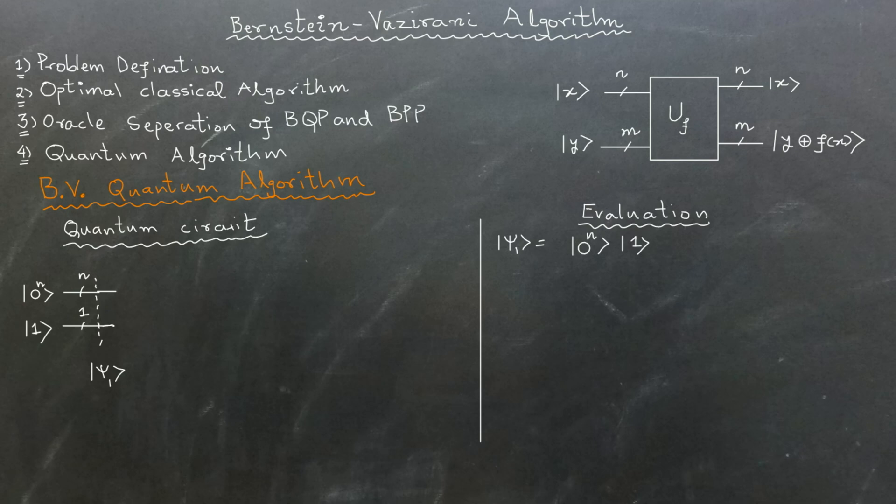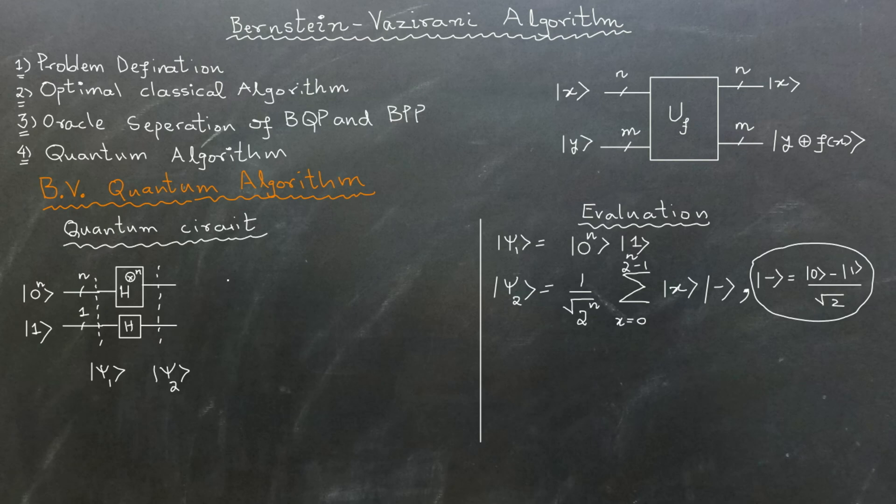Next, we apply the Hadamard transformation to both registers. This creates equal superpositions of all possible inputs in our first register, while the second register becomes ket minus. Ket psi 2 is equal to 1 over square root of 2 raised to power n times the summation of all superpositions of x times ket minus, where ket minus is equal to 1 over square root of 2 times ket 0 minus ket 1.